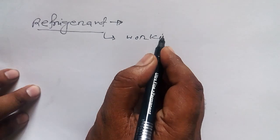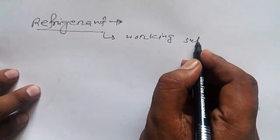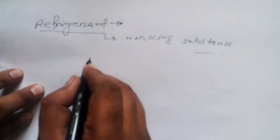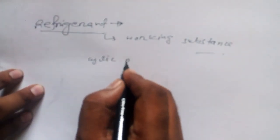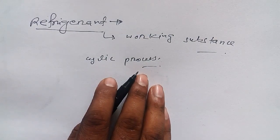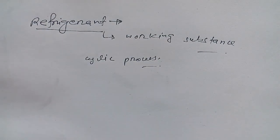which works in a cyclic process. So I must say this is a working substance which works in a cyclic process in order to maintain lower temperature than that of surrounding. This is known as a refrigerant. So how it works, basically, if you understand